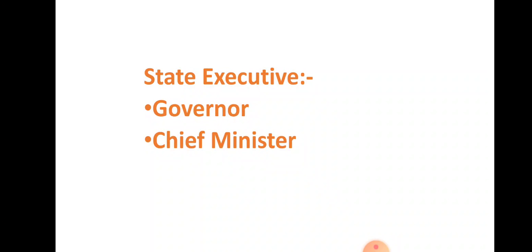Now we will read about the Chief Minister. The Chief Minister is appointed by the Governor. He presides over the meetings of the Council of Ministers. The Chief Minister acts as a link between the Governor and the Council of Ministers. He can also appoint, dismiss, and reshuffle members of the Council of Ministers, and coordinates the work of different ministers and ministries.